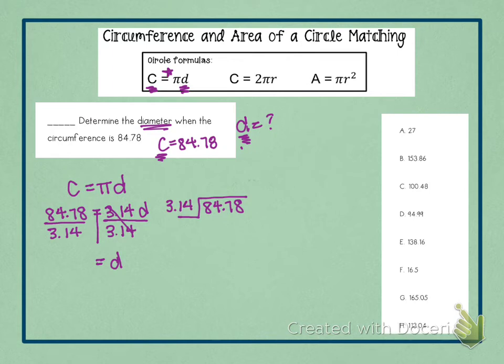Remember we do not divide by decimals. So we need to move our decimal over two times to the right. One, two. And then again, what we do on the outside, we have to do on the inside. One, two. And then we bring our decimal straight up. Remember, I like to rewrite this just because it's neat. 314 and 8,478. But don't forget, you have to have that decimal right there.